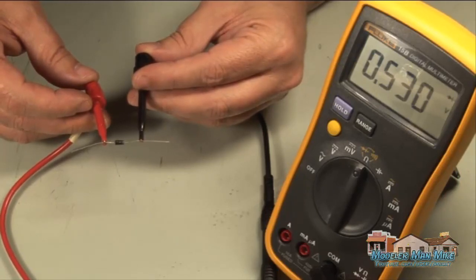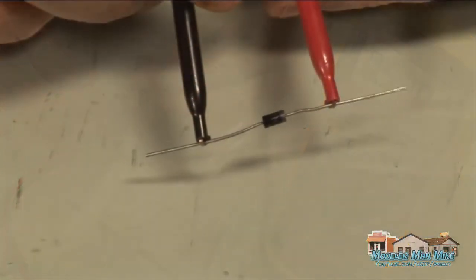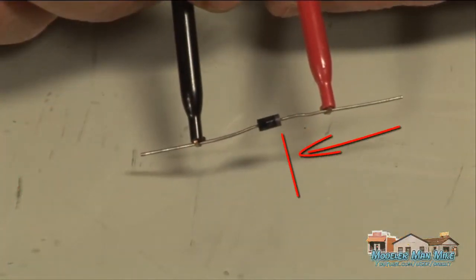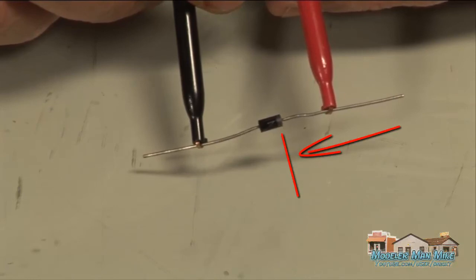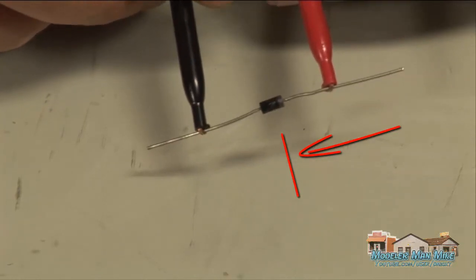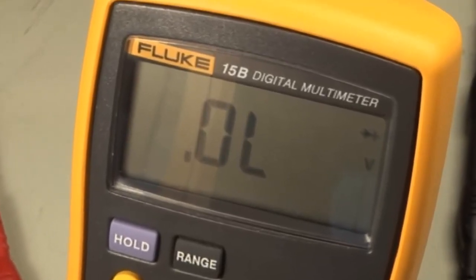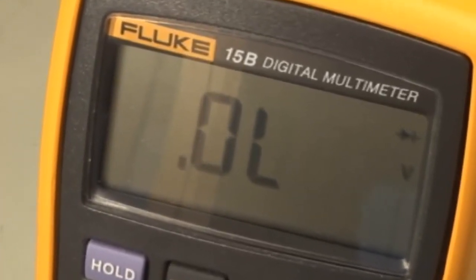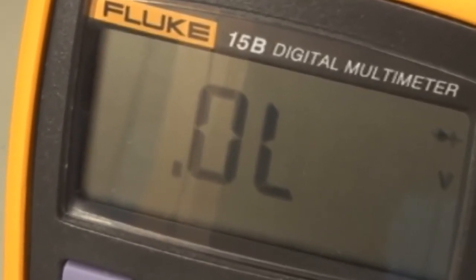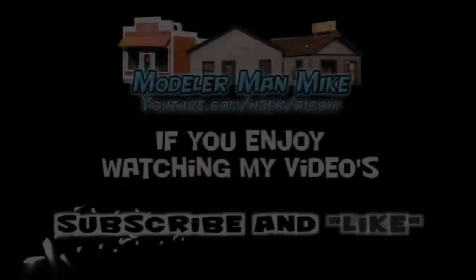Diodes are really nice to protect your circuits with, and I'd suggest you use them as much as you can. In this scenario, it certainly wouldn't pass through and it reflects this with a negative reading. I hope you enjoyed this video on multimeters. Take care.